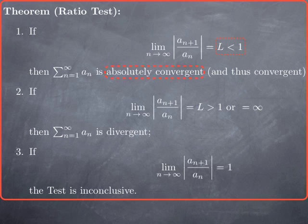This is a criterion for absolute convergence, which is of course stronger than convergence. This is similar to the behavior of a geometric series: if the ratio goes to a limit less than 1 — in the case of a geometric series the ratio would be constant — then we have convergence when this constant is less than 1. Here we look at the limit, and when it's less than 1, we have convergence.